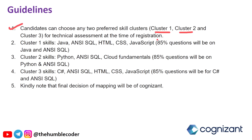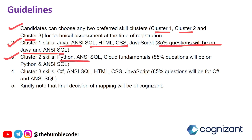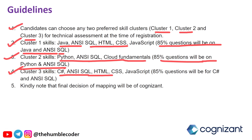Candidates can choose any two preferred skills — cluster one, two, or three — for the technical assessment at the time of registration. Cluster one skills are Java, ANSI SQL, and HTML CSS — 85% of questions will be on Java and ANSI SQL, and the remaining on HTML CSS. Cluster two skills are Python, ANSI SQL, and cloud fundamentals — 85% of questions will be on Python and ANSI SQL. Cluster three skills are C#, ANSI SQL, HTML, CSS, and JavaScript — 85% will be on C# and ANSI SQL, and the remaining on HTML and JavaScript. Kindly note that the final decision of cluster mapping will be Cognizant's.